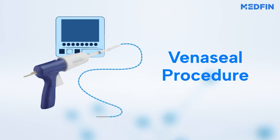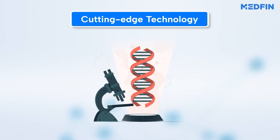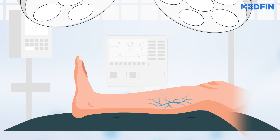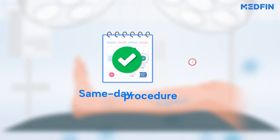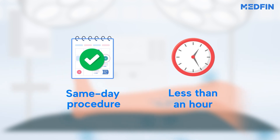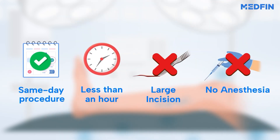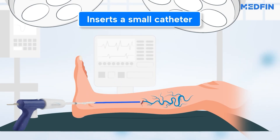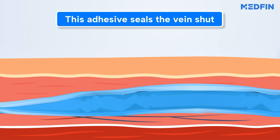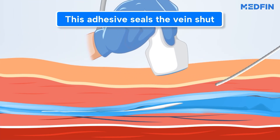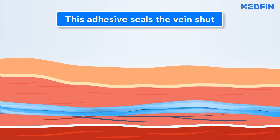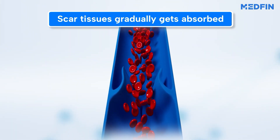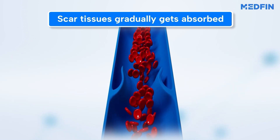Want to know what Venaseal is? Venaseal is a cutting-edge treatment specifically designed for medium to large varicose veins. Like Sclerotherapy, it's a same-day procedure, typically completed in under an hour. The doctor uses a small catheter to inject a medical-grade adhesive into the affected vein. This adhesive works by sealing the affected vein shut. Once the vein is closed, it becomes scar tissue and gradually gets absorbed by your body. Meanwhile, your blood circulation improves as it reroutes through healthier veins.